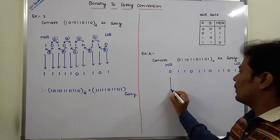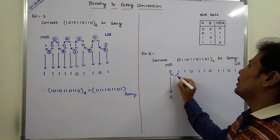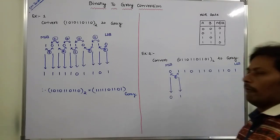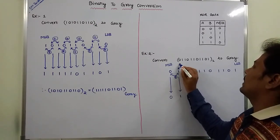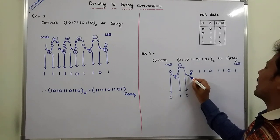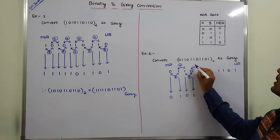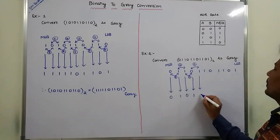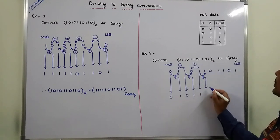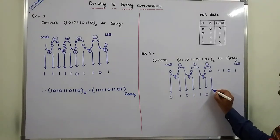First, whatever the MSB bit is, we directly write it as the same in the grey code. Next, the MSB bit and the next bit — we perform the exclusive OR operation. Both bits are different, so the output is 1. Next pair: both bits are same, output is 0. Next pair: both bits are different, output is 1. Next pair: both bits are same, output is 0. Next pair: both bits are same, output is 0. Next pair: both bits are different, output is 1.